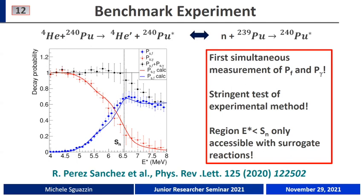Two important points about surrogate reactions: first, the evolution of probabilities is quite fast — within a range of 1 MeV you can have a very fast increase and decrease — so high accuracy in evaluating the excitation energy of the compound nucleus is very important. Second, surrogate reactions are the only instrument available to populate excitation energies below the neutron separation energy, providing very important information about the parameters describing the de-excitation of the compound nucleus.